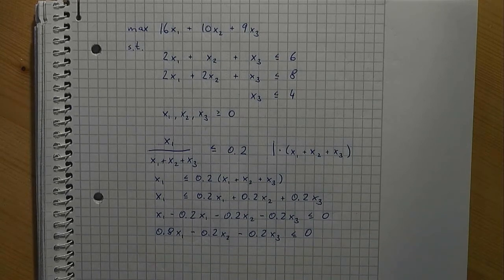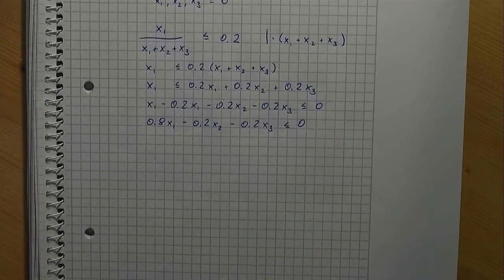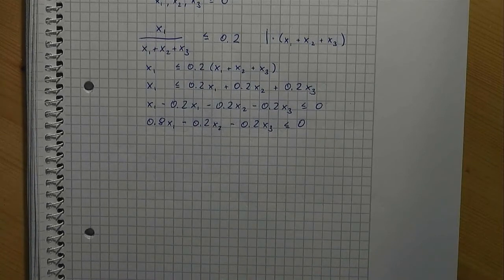Just to get used to it, let's do another exercise. Can you formulate a linear constraint that makes sure that the revenue gained by chairs and loungers is at least 60% of the total revenue? I recommend to pause the video now.